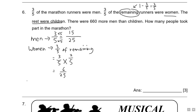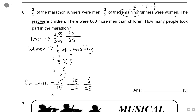The rest were children. Let's find out: the entire population is 25 units. You have men at 15 units and women at 6 units. I spotted a mistake — I started with a whole of 25. So 25 minus 15 units minus 6 units gives me 4 units for children.